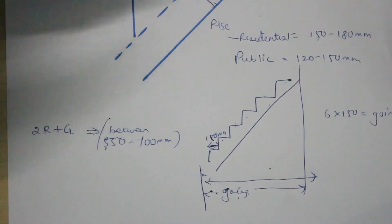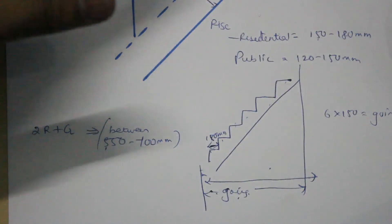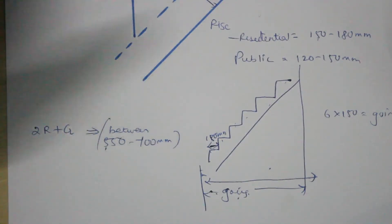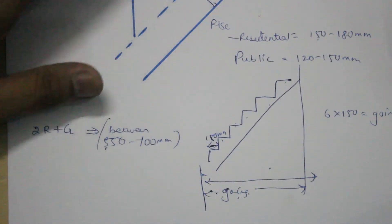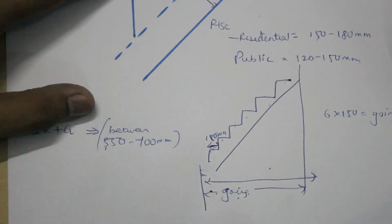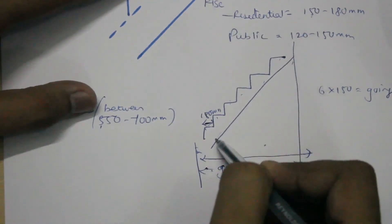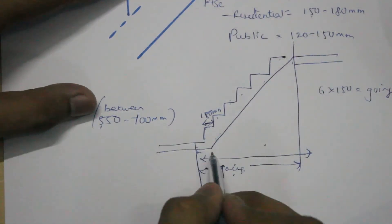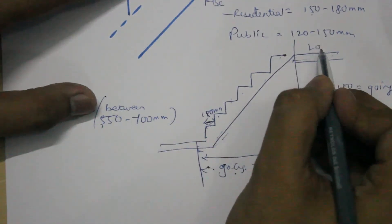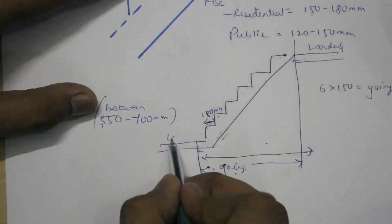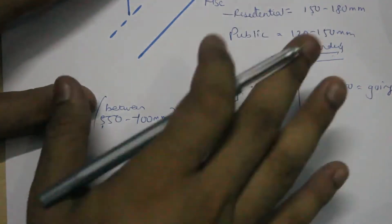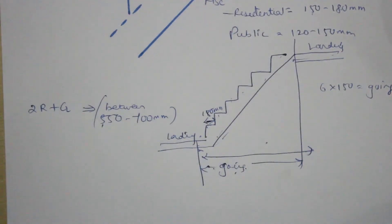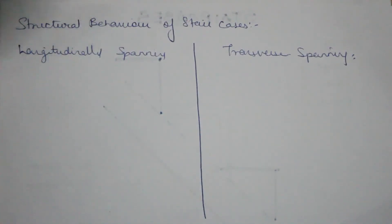The landing is an important component. It is the horizontal platform provided at the ends of a series of steps. It serves as a resting place and helps in changing direction. The landing should not be less than the width of the stair and should preferably be not less than one meter. It is provided at the end of each flight of stairs.